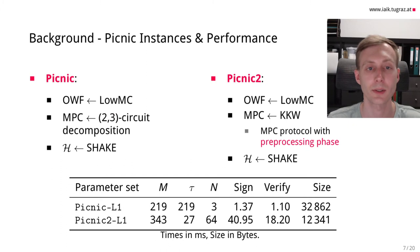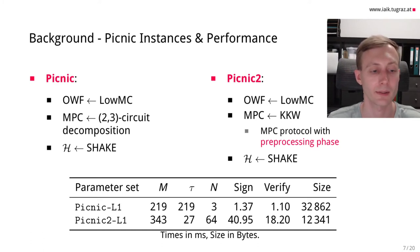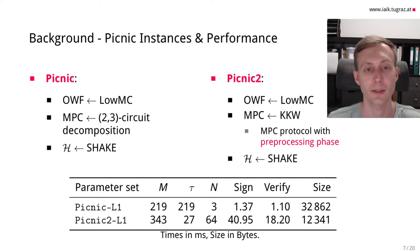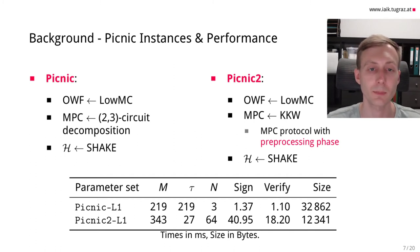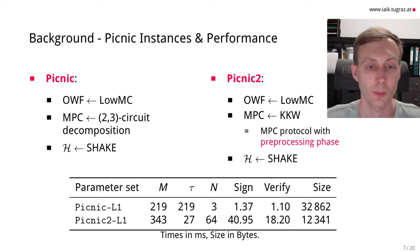The concrete instantiation of Picnic is as follows. In the first round of the NIST post-quantum competition, there was Picnic1, which uses LowMC as its one-way function and block cipher. LowMC is a block cipher especially suited for execution in MPC protocols — it has a very low number of AND gates, and these AND gates contribute most of the communication during execution. The MPC protocol was a 2-3 circuit decomposition with three players and two-privacy, so two parties working together cannot learn anything. The hash function used was SHAKE.